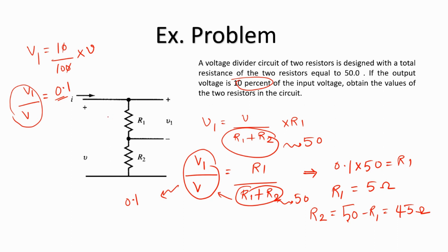So we have found R1 to be 5 ohms and R2 to be 45 ohms. Because we have designed the resistors in this manner, whatever we give as the input, the output will always be 10 percent of that. That's it for this video on voltage division rule — I hope it was helpful. Please subscribe to the channel for more such videos. Thank you for watching.